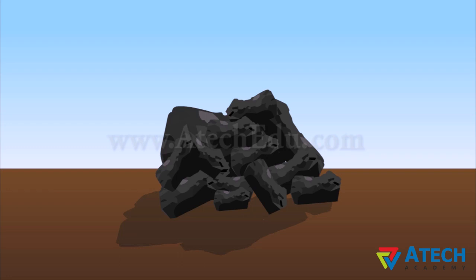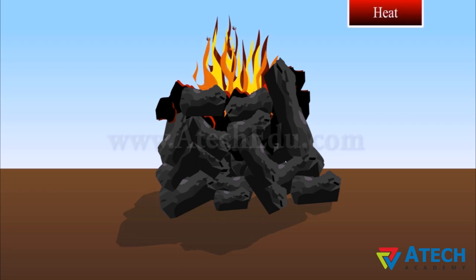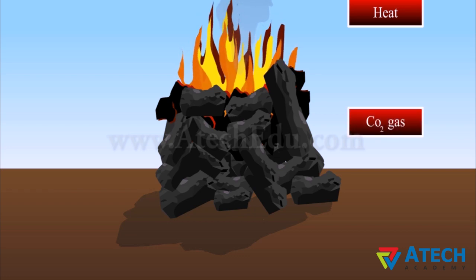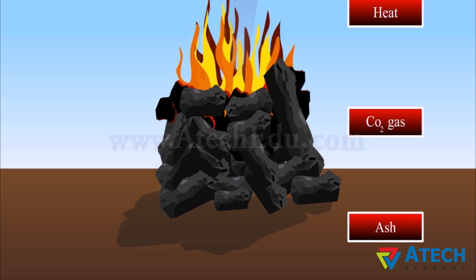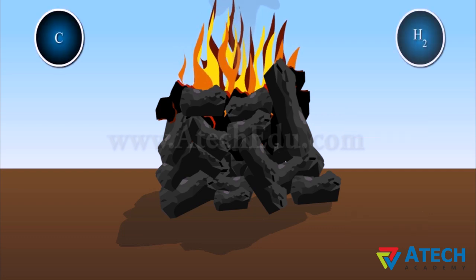Since it is formed from the remains of vegetation, coal is also called a fossil fuel. When heated in air, coal burns to give heat and produces mainly carbon dioxide gas. The end residue of coal after burning is ash. Coal is primarily made up of carbon. It also contains hydrogen, oxygen, nitrogen and sulfur.